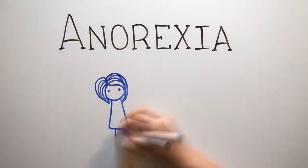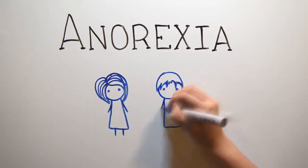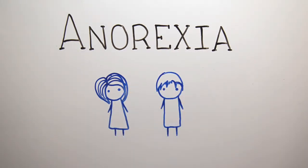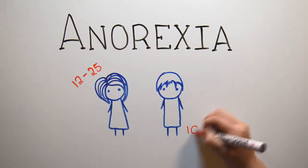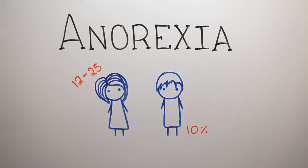Anorexia nervosa, commonly called anorexia, is an eating disorder. It is a psychological illness that most commonly affects young people between the ages of 12 and 25. Anorexia is more common in girls, but around 10% of people with anorexia are male.